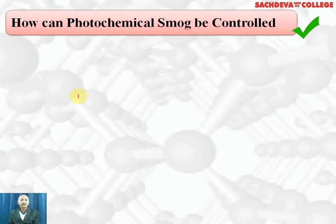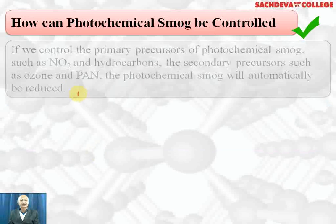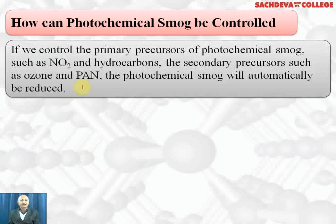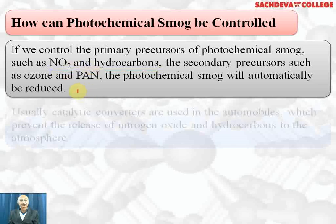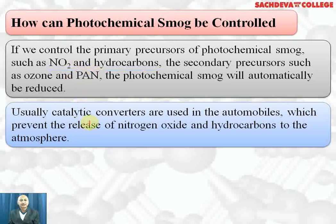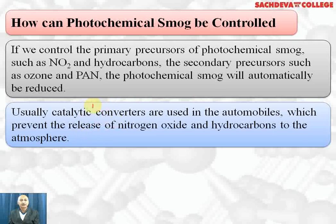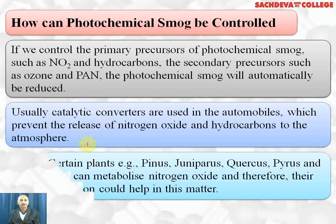How can we control photochemical smog, which is extremely harmful? If we control the primary precursors of photochemical smog such as NO₂ and hydrocarbons, the secondary precursors such as ozone and PAN, and photochemical smog will automatically be reduced. Usually catalytic converters are used in automobiles and they prevent the release of nitrogen dioxide and hydrocarbons, so they prevent the formation of secondary pollutants.